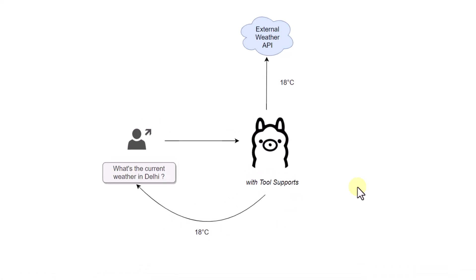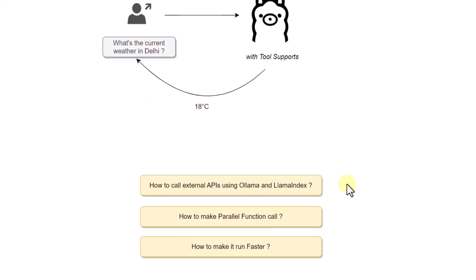In this video, we are going to create an application using Ollama and LlamaIndex. Using this application, we will interact with an external API — whenever a user asks a specific question, Ollama's tool support will invoke that API, get a response, and pass it back to the user. We will focus on three things: calling external APIs, making parallel function calls, and making Ollama models run faster locally.